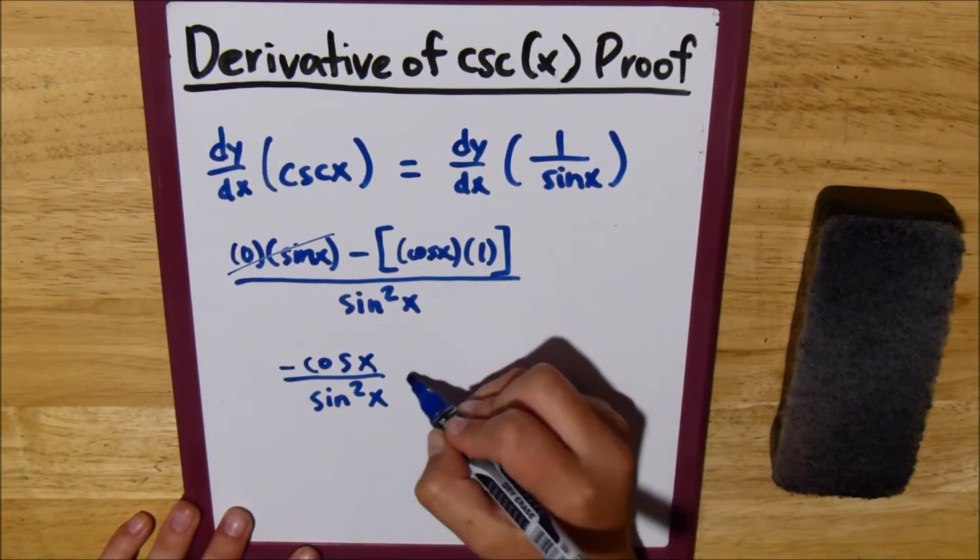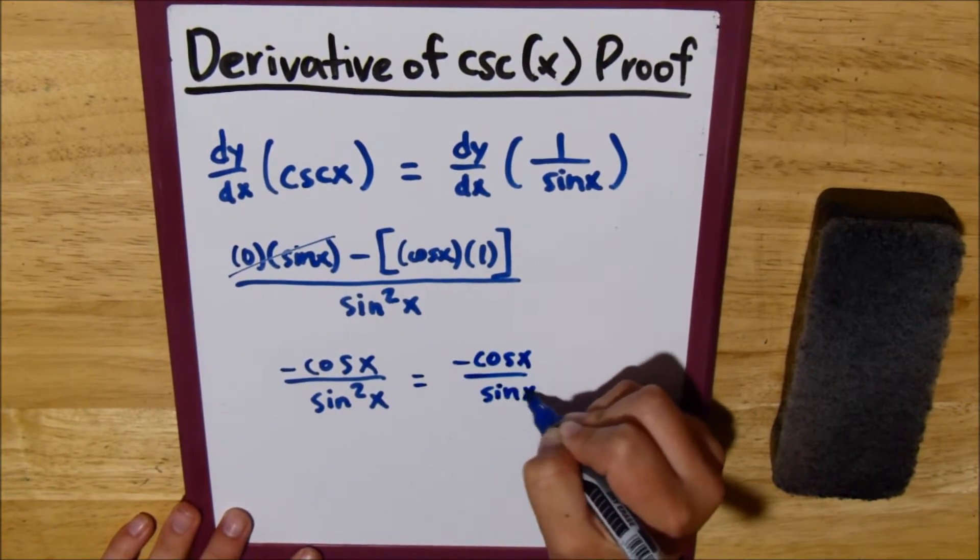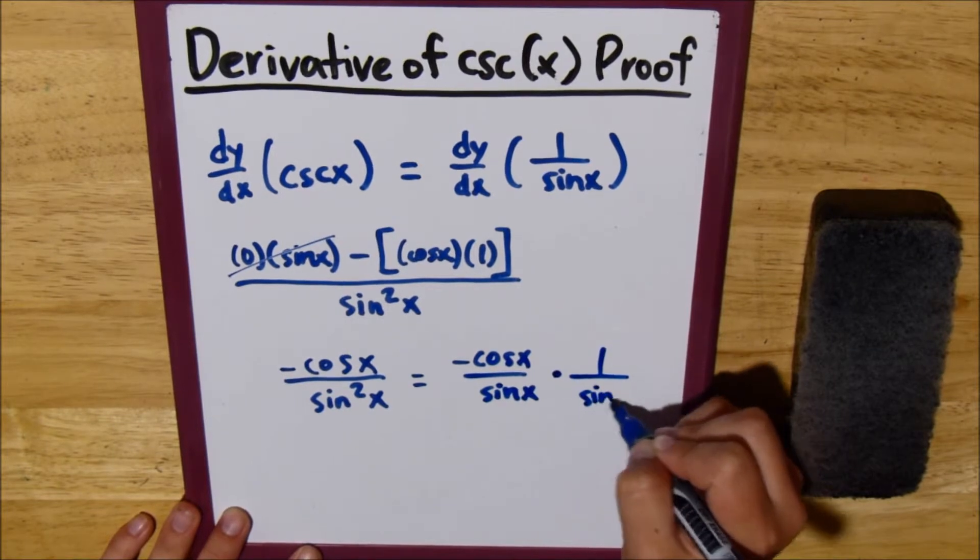So, let's have negative cosine of x over sine of x, and then let's multiply that by 1 over sine of x.